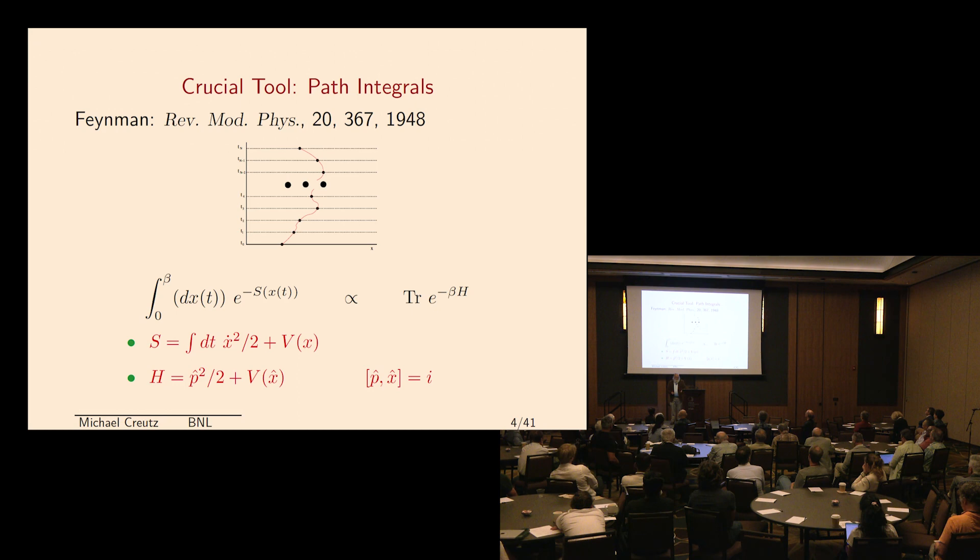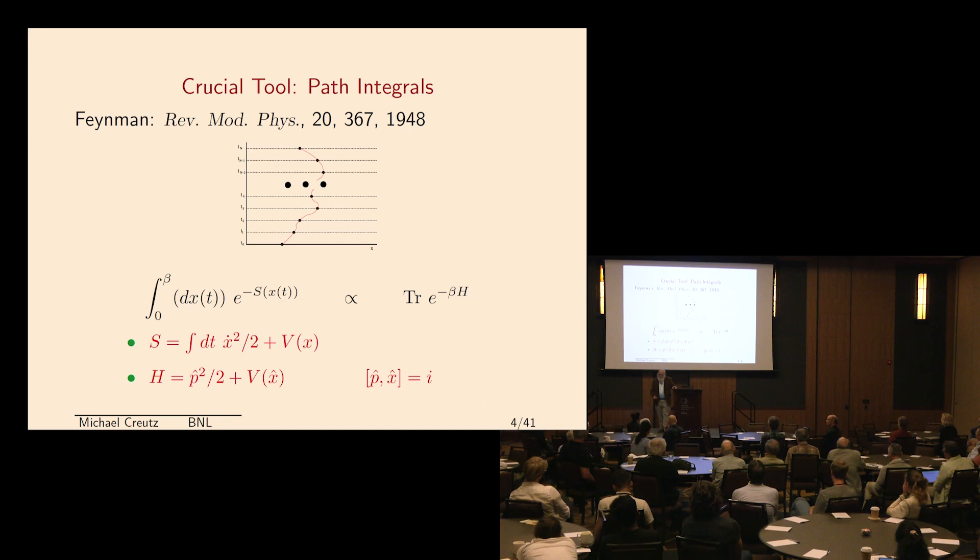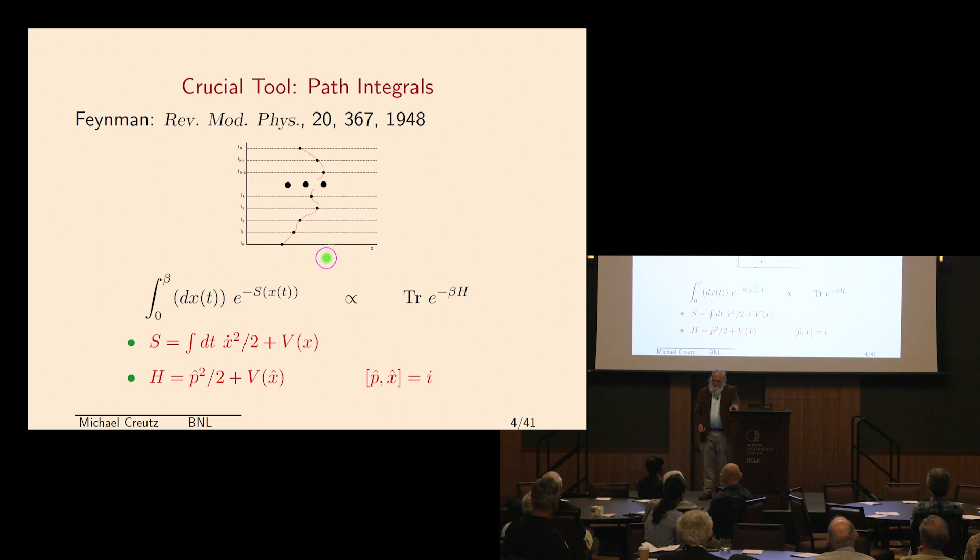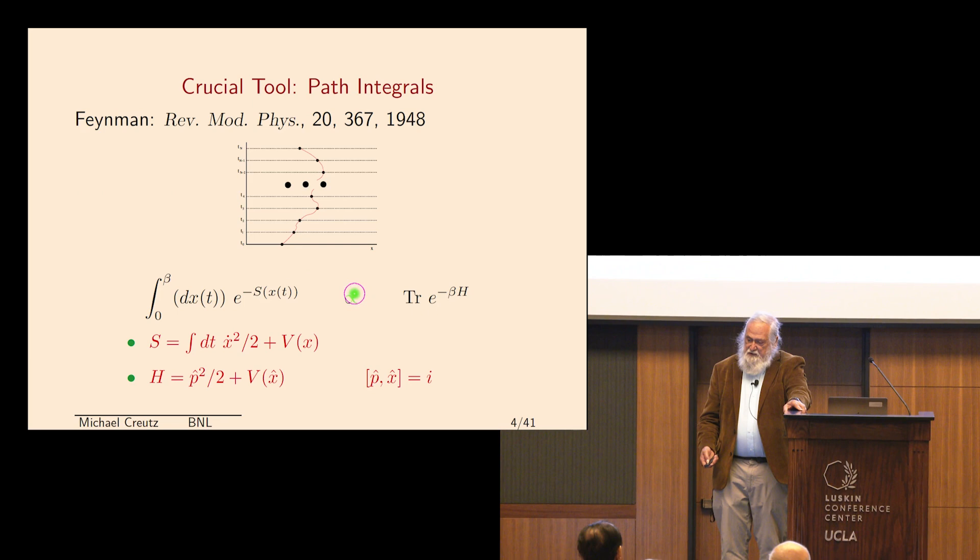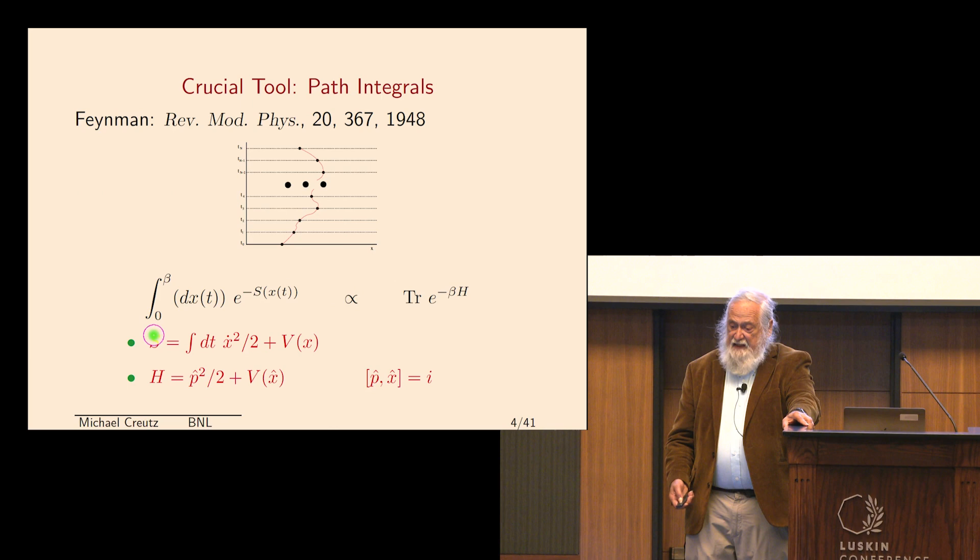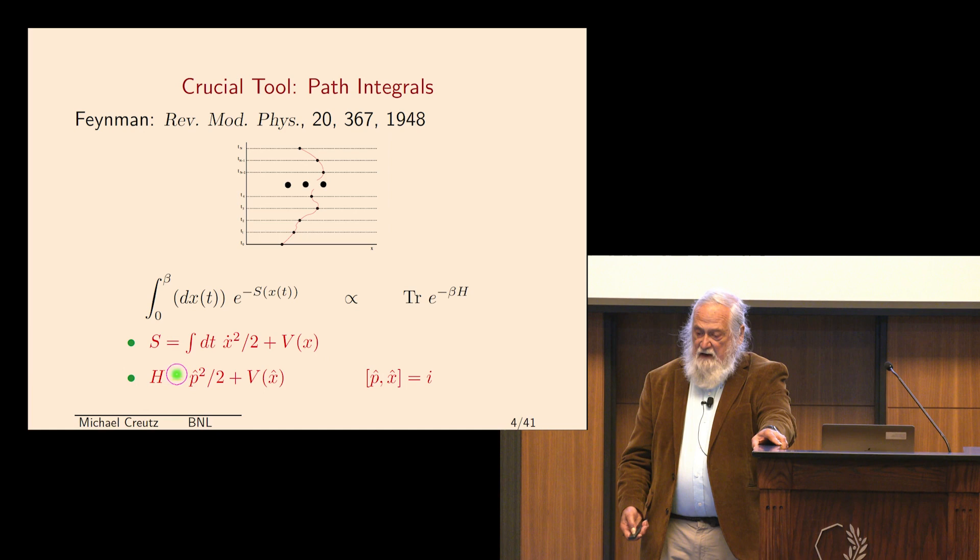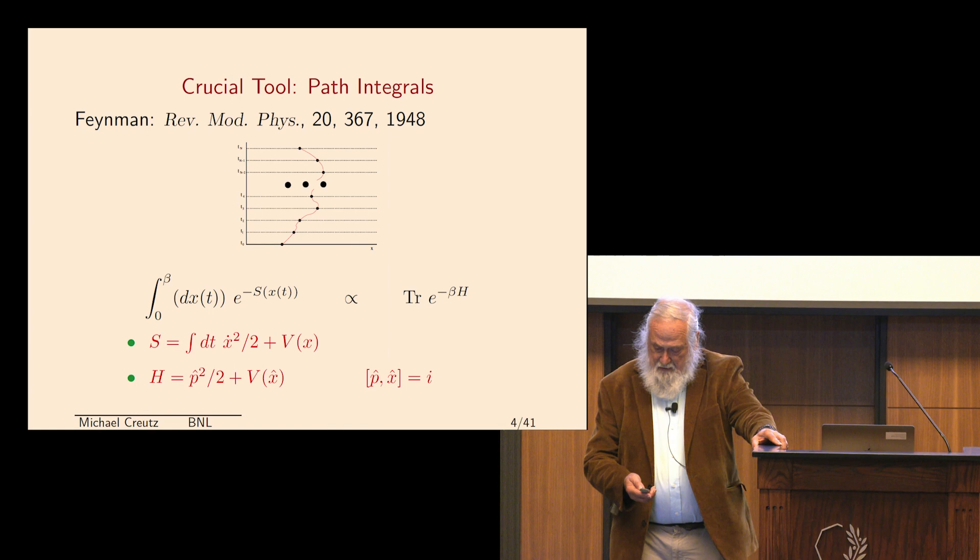Now, the crucial tool for a lot of this stuff is the path integrals, which go way back to Feynman many, many years ago. If you take a particle in a potential and study all of its paths through that potential, Feynman showed a remarkable correspondence between integrating all the paths this particle can take. And that's proportional to the trace of e to the minus beta times some Hamiltonian. Here, s is a classical thing. These are classical variables. Whereas the Hamiltonian involves quantum variables, and these quantum variables do not commute. And the amazing thing that these are equivalent.